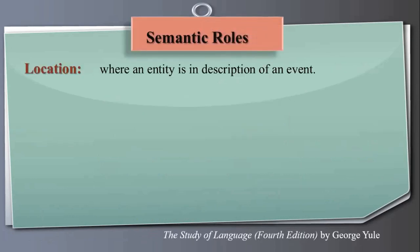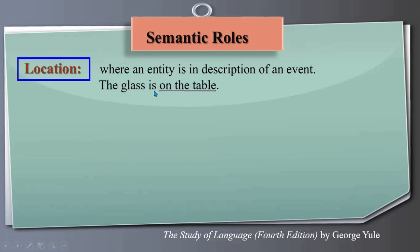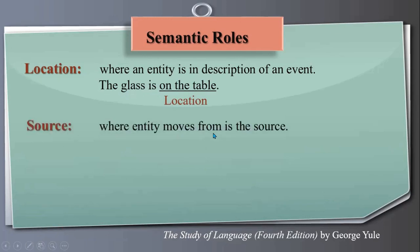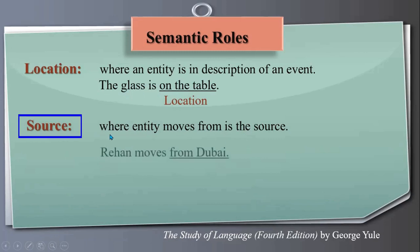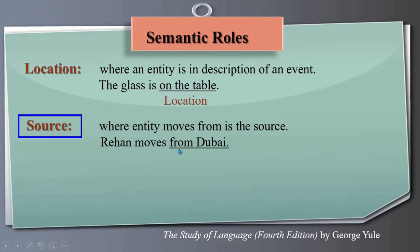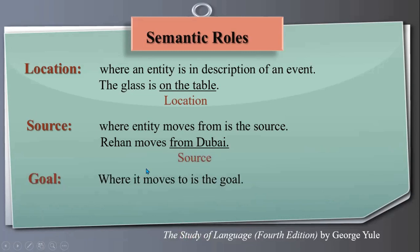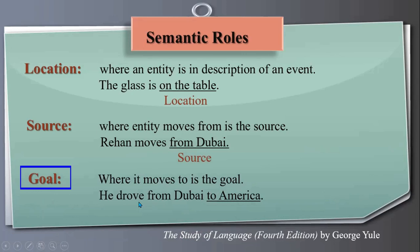Location is another semantic role — where an entity is or where an action takes place. For example, in 'The glass is on the table,' 'on the table' is the location. Source refers to where an entity moves from — for example, in 'Rehan moves from Dubai,' 'from Dubai' is the source. Goal is the opposite — where something moves to. In 'He drove from Dubai to America,' 'to America' is the goal.